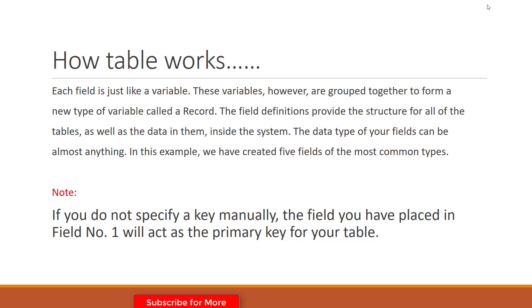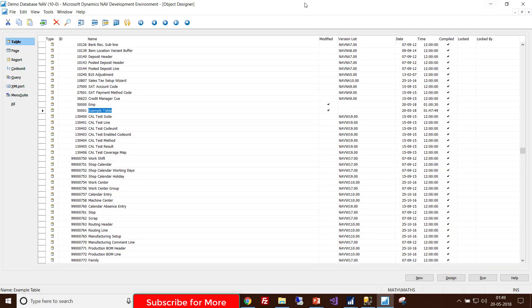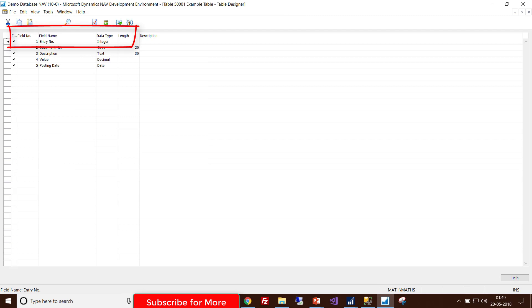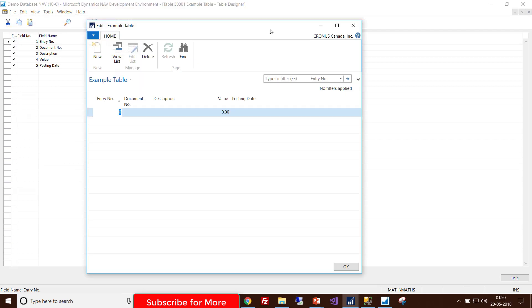Inside the system, the data type of your fields can be almost anything. One very important note: if you do not specify a key manually, the field placed at field number one will act as the primary key. In this example, Entry Number is field one, so it acts as the primary key.